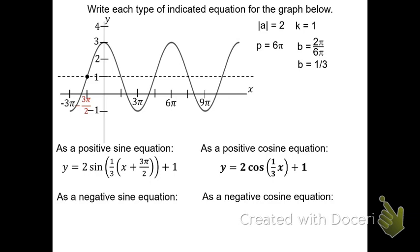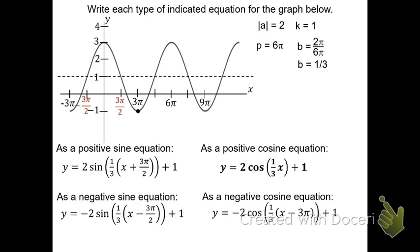For the negative sine, we could use 3 pi over 2 to the right, giving y equals negative 2 sine, 1 third, quantity x minus 3 pi over 2, plus 1. Lastly, for a negative cosine equation we need to be at minimum — we could use 3 pi to the right, giving x minus 3 pi in the parentheses, or negative 3 pi to the left. So y equals negative 2 cosine, 1 third, quantity x minus 3 pi, plus 1. Thank you for watching.